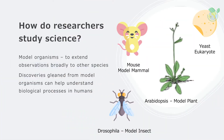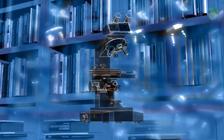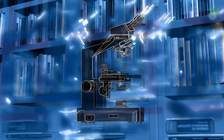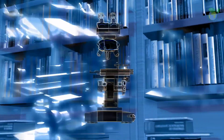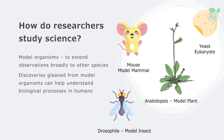Researchers make use of model organisms to extend their observations broadly to other species. Examples of model organisms used include the model weed Arabidopsis, the Drosophila fly, and the model mammalian mouse. It is through such detailed observation and understanding of biological processes from model organisms that we can extend these discoveries to humans in the area of health and diseases.